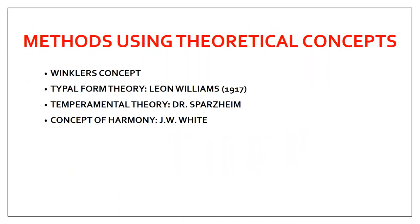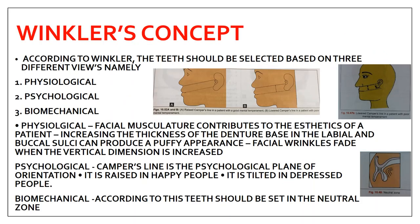The next are methods using theoretical concepts. These concepts were given by certain authors and are not commonly used, but should be included if a question is asked. The first is Winkler's concept, which states that teeth should be selected based on three views: physiological, psychological, and biomechanical. Physiologically, the facial musculature contributes to the aesthetics of the patient — for example, increasing the thickness of the denture base in the labial and buccal sulcus will produce a puffy appearance.